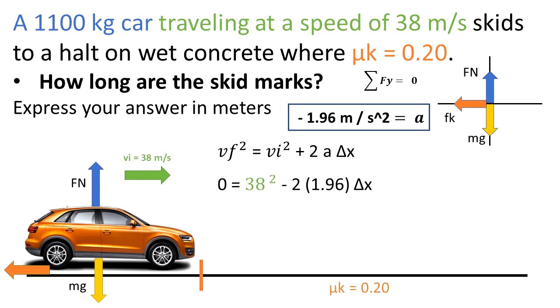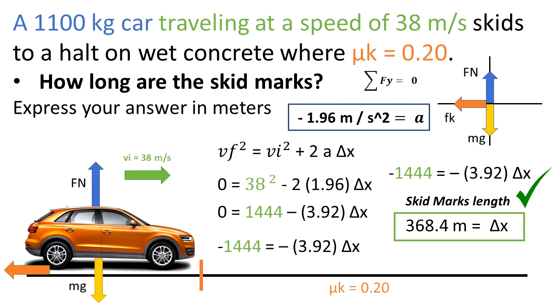We have 38 squared minus 2 times 1.96, that's the acceleration that we just got, times Δx. We work out the numbers following the algebra. When we divide, we get that Δx is 368.4 meters.